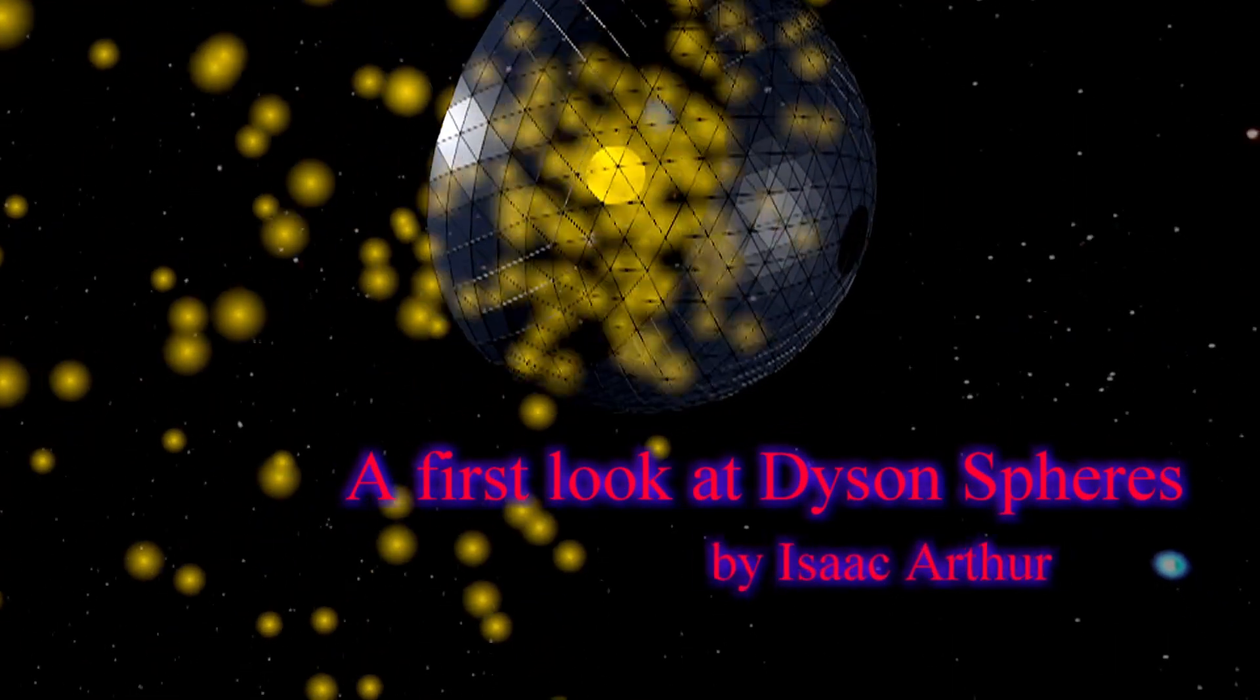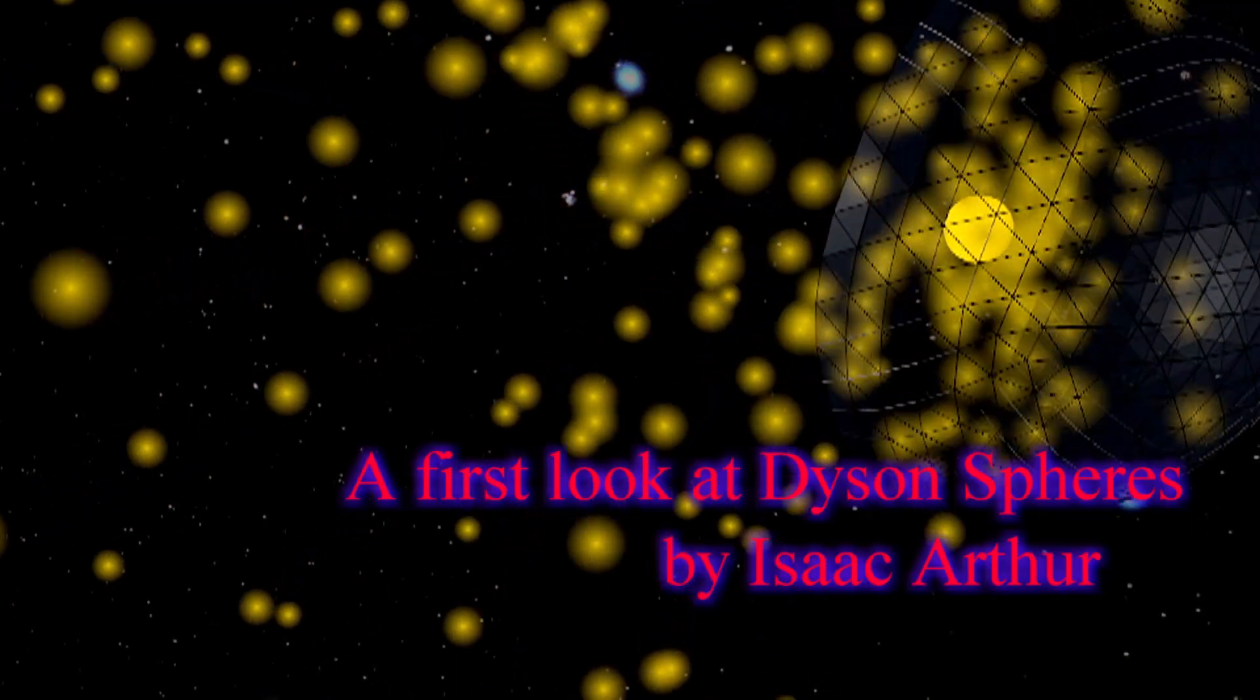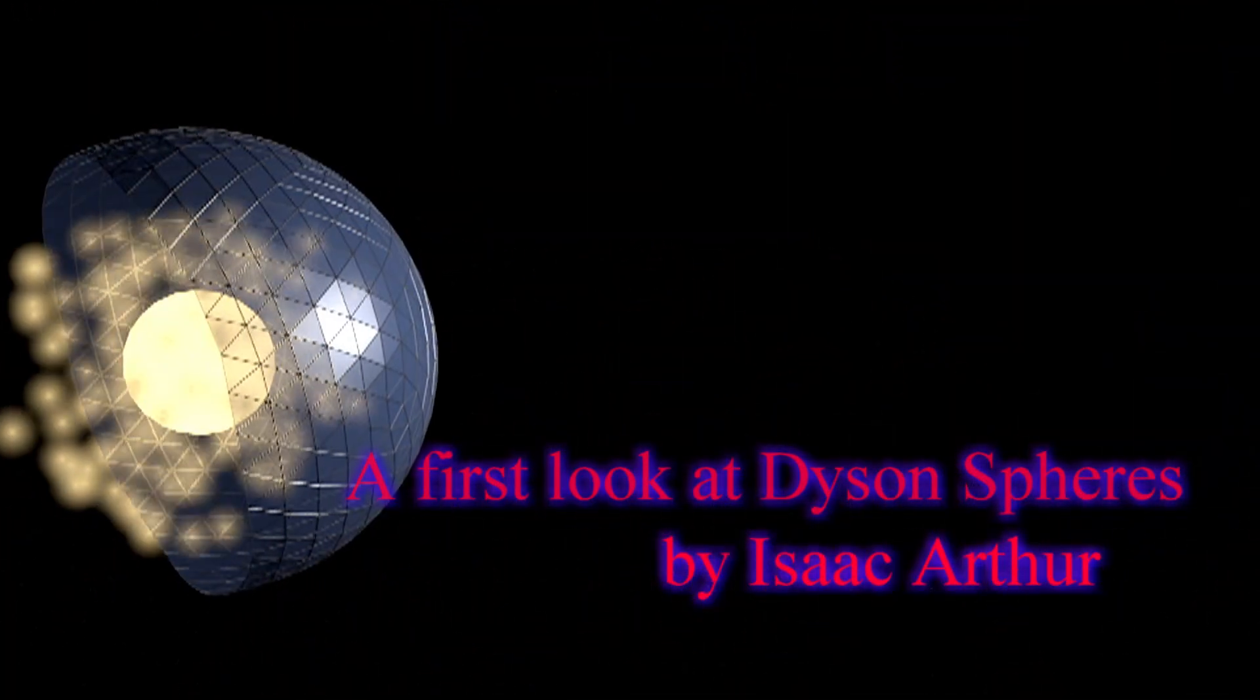This week we will be taking a quick look at the Shikatov Cluster, one of the simplest types of Dyson Swarm to make, and a system for both moving things around the solar system and moving entire solar systems.